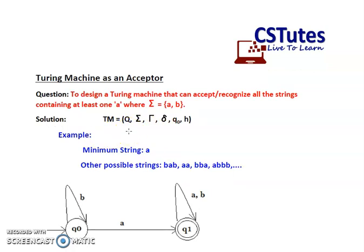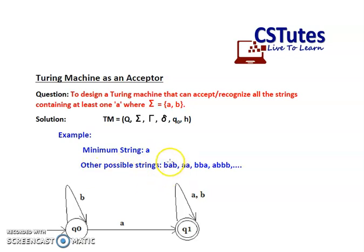The minimum string that must be accepted is a single A, because it should contain at least one A but there is no restriction on the number of B's — you can have any number of B's. Other valid strings include BAB, AA, BBA, ABBB, AABB, or any combination of A's and B's in any order. The only restriction is that there must be at least one A.